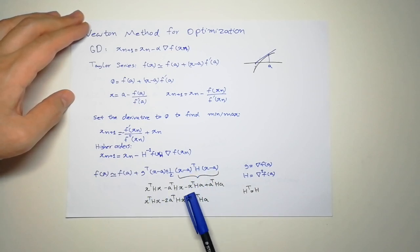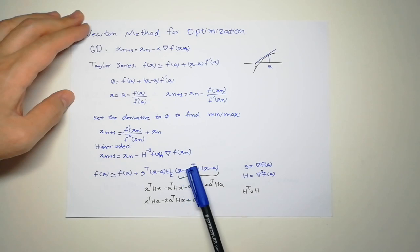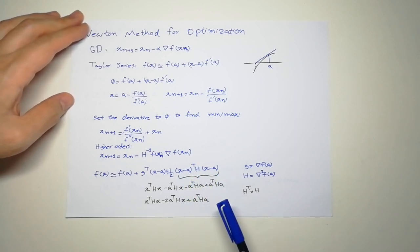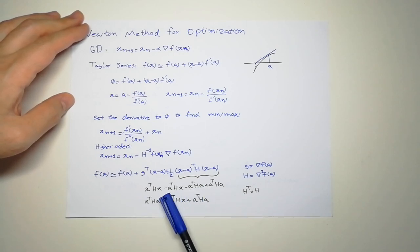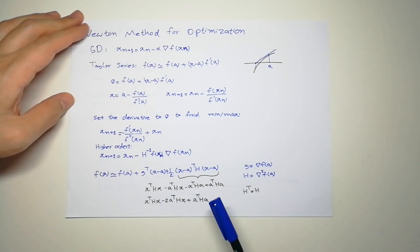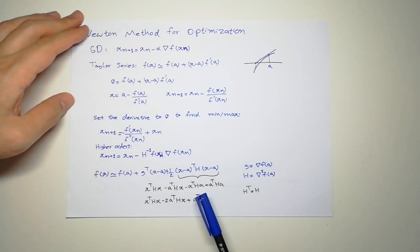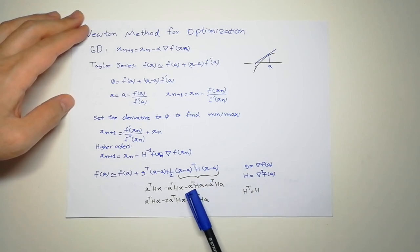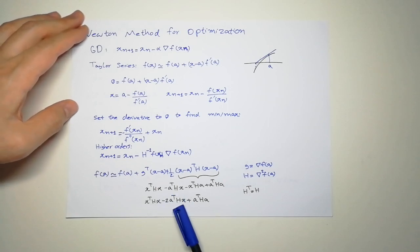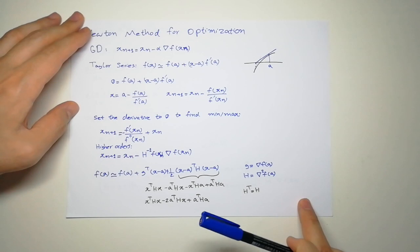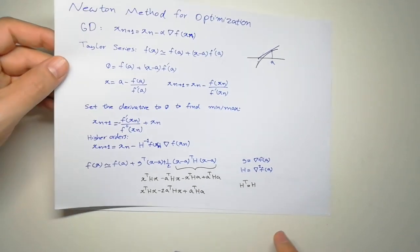x transpose H x minus a transpose H x minus x transpose H a plus a transpose H a. Okay, so I keep this and this, and because every single element is a number, I can just simply take the transpose of that. So I transpose this guy, x transpose H a, and as I said, H is equal to its transpose, so we get a transpose H transpose x, which is exactly what we have here. So we have two of them, and this will be canceled by one over two.